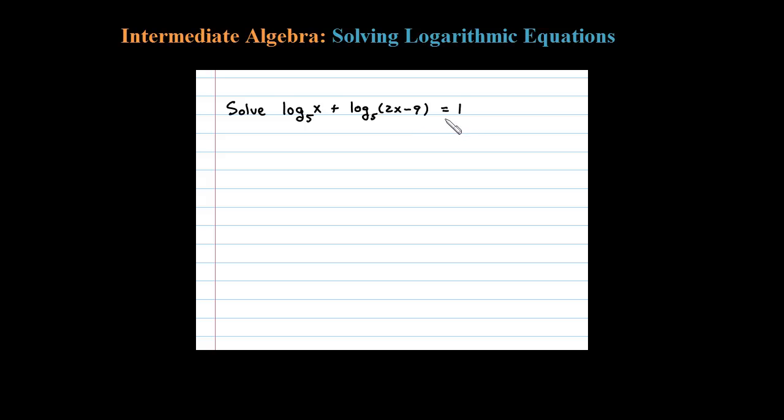Here we're asked to solve a logarithmic equation. The first step is to simplify down to one logarithm. I see two logs with the same base, and that equals log base 5 of the product x times (2x minus 9).